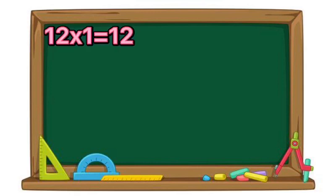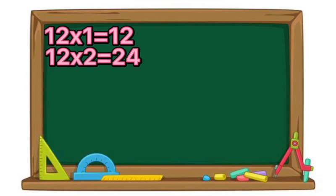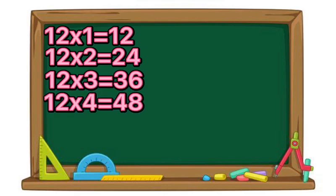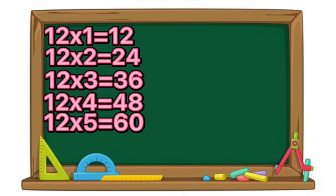12 times 1 equals 12. 12 times 2 equals 24. 12 times 3 equals 36. 12 times 4 equals 48. 12 times 5 equals 60.